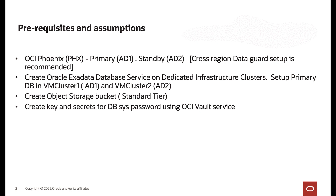Here are the prerequisites and assumptions. We'll be using the OCI Phoenix region, which has two ADs. AD1 will be designated as primary and AD2 as standby, though we highly recommend a cross-region Data Guard setup for better disaster recovery. We have already created two ExaData clusters — the primary database runs in VM cluster 1 and the standby in VM cluster 2. An object storage bucket has been created to store the Fullstack DR locks, and using the OCI Vault service, we've created a secret containing the database password.